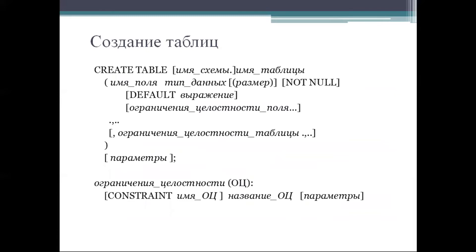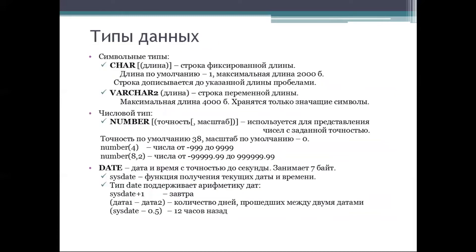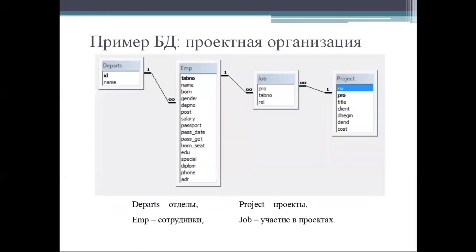Создание таблицы. Типы данных: символные типы — CHAR(длина), строка фиксированной длины, длина по умолчанию 1, максимальная длина 2000, строка дописывается до указанной длины пробелами; VARCHAR2(длина) — строка переменной длины; числовой тип — NUMBER(точность, масштаб), используется для представления чисел с заданной точностью; DATE — дата и время с точностью до секунды.